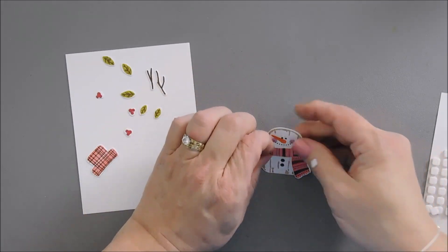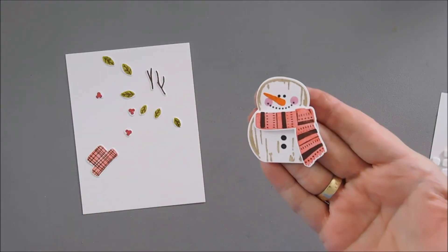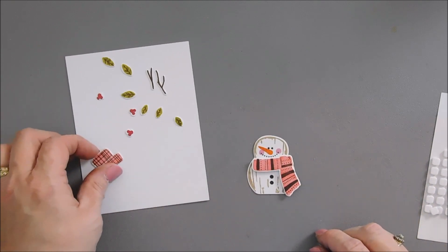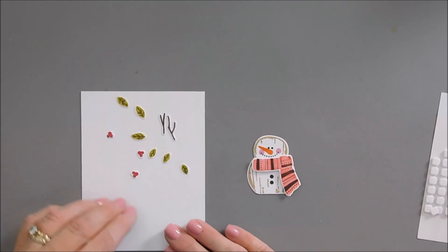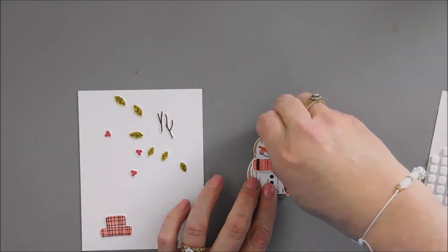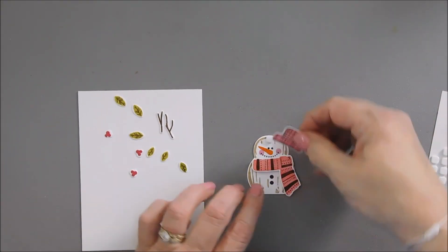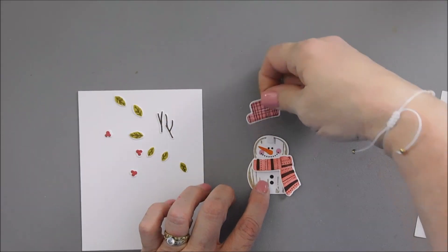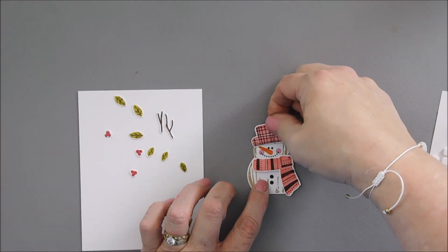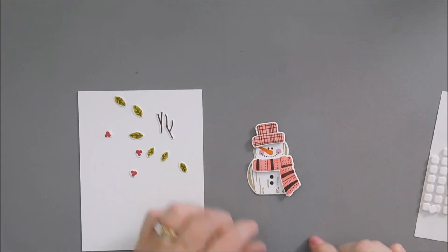I just think this is so cute. He looks nice and cozy. Next I'll take our hat and we're going to add one foam square to the head of our snowman. And then we can add our hat. I think I want to tilt it just a little bit, like so.